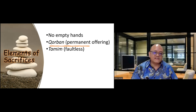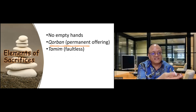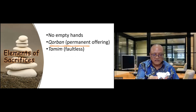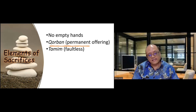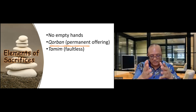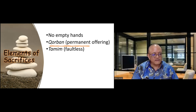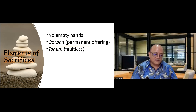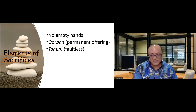A third principle of sacrifice is tamim. When you bring something to God, it must be faultless. If the sacrifice is an animal, it must be without disease, torn skin, or broken bones, and it must be of the right age — a two-year-old lamb is the most common requirement. A non-tamim sacrifice would not be accepted, which is why priests guarded the entrance to inspect the sacrifices. We are told in the New Testament that Jesus is the Lamb of God, like us in every respect but sinless. He is tamim.